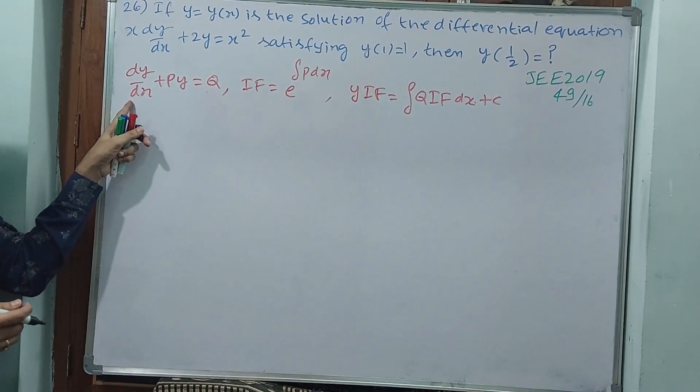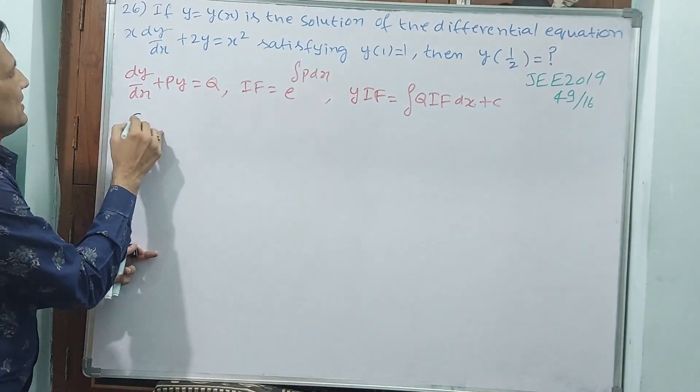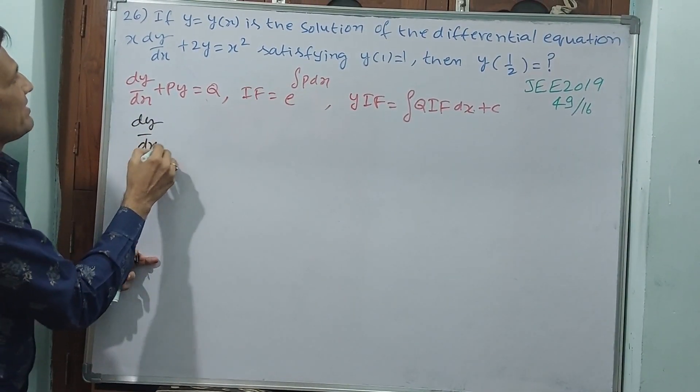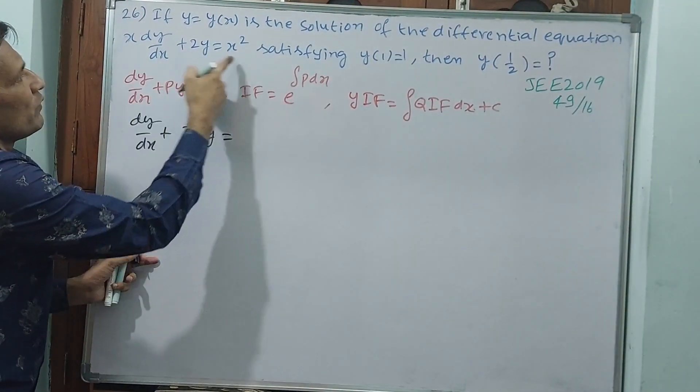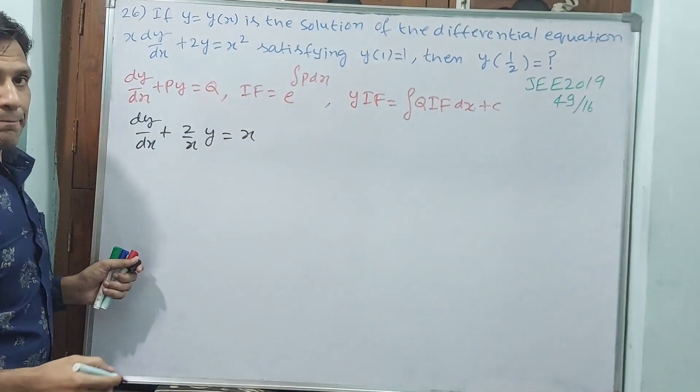You require only dy by dx but x is there. You divide it by x. dy by dx plus 2 by x into y equals... If you divide it by x, then only x will be there.